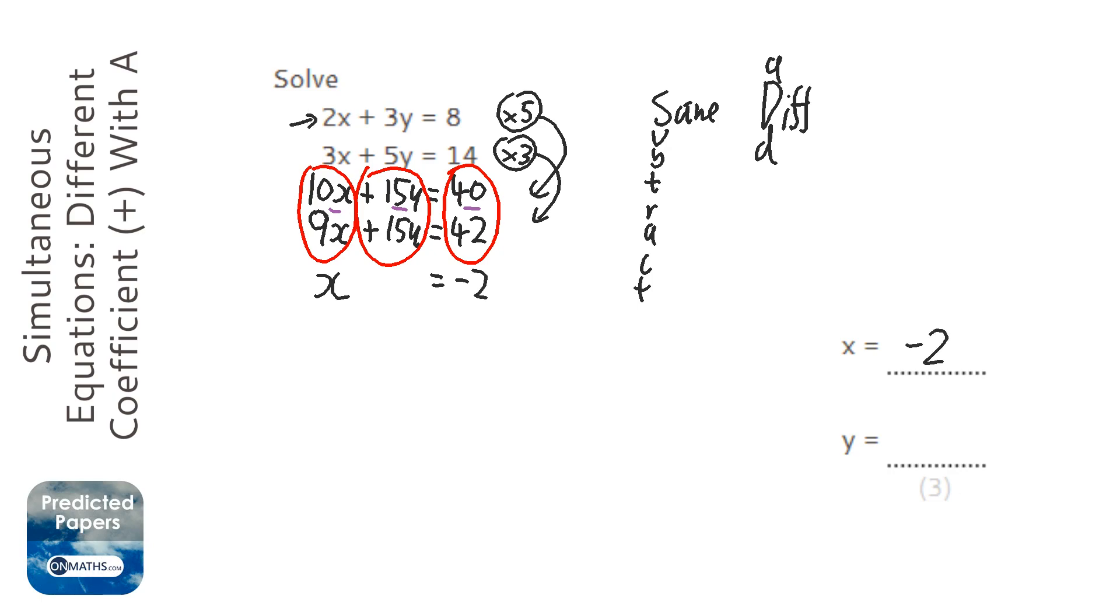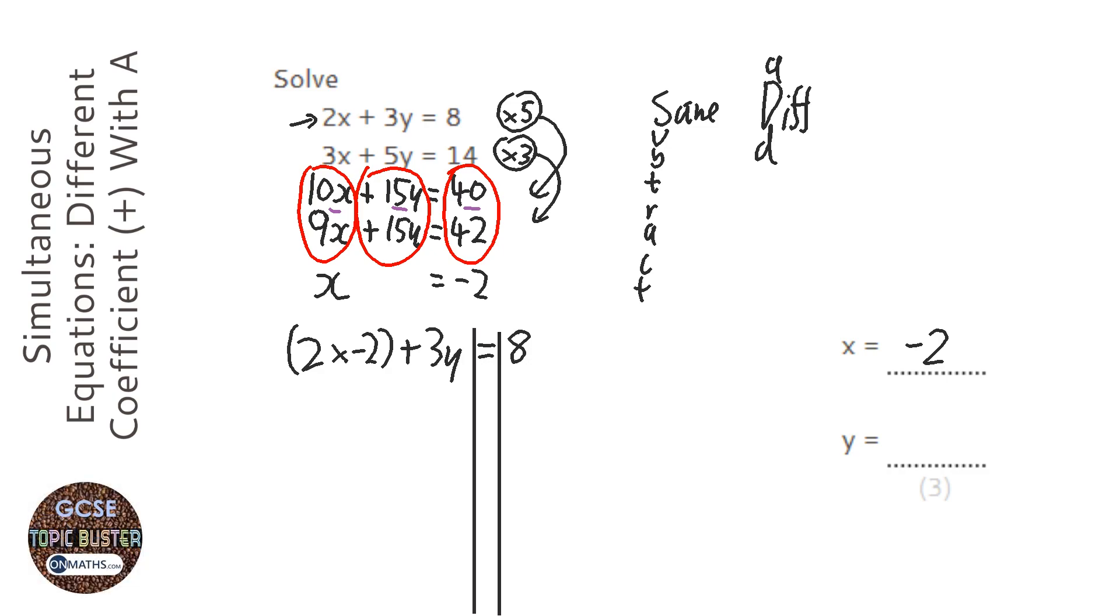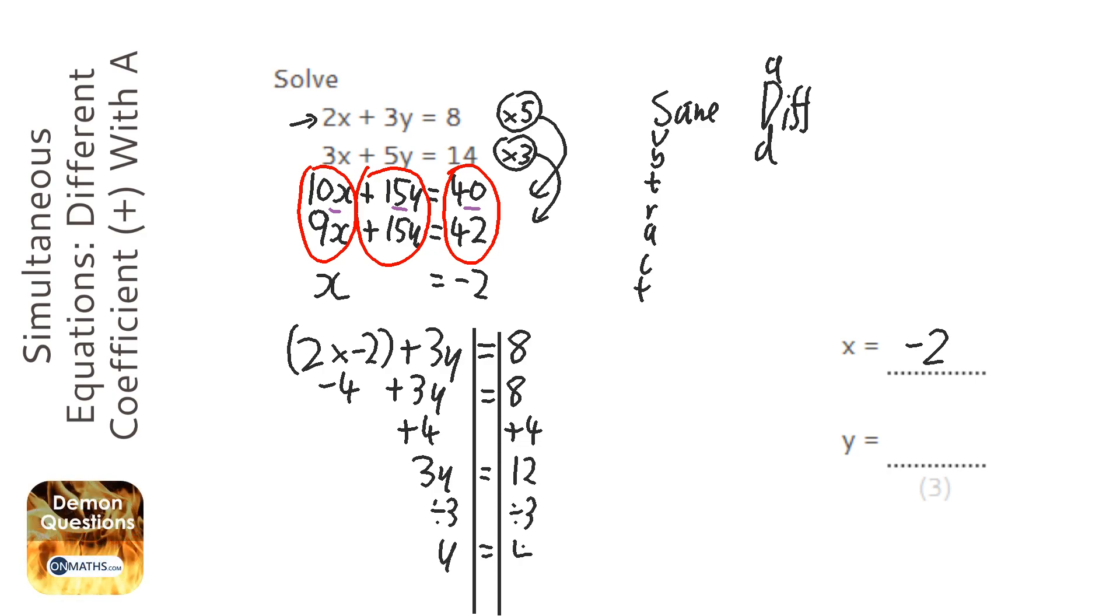To find the other one we've got to substitute it into one of the equations, I'm going to pick the top one. So we've got 2 times minus 2 plus 3y equals 8, and then I'm going to put my lines in. So that's going to be minus 4 plus 3y equals 8. I'm going to add 4 to both sides to get rid of that minus 4. So 3y equals 12, and divide both sides by 3. So we've got y equals 4.